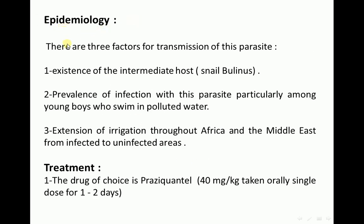Epidemiology: There are three factors for transmission of this parasite. First, existence of the intermediate host, which is the snail Bulinus. Second, prevalence of infection with this parasite, particularly among young boys who swim in polluted water. Third, extension of irrigation throughout Africa and the Middle East from infected to uninfected areas.